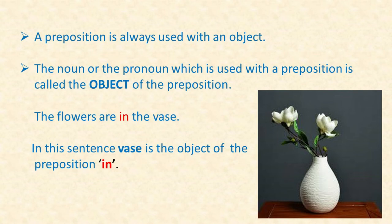Look at this sentence. The flowers are in the vase. In this sentence, the preposition in is used with the word vase, and vase is a noun. So, vase is the object of the preposition in. Got that?